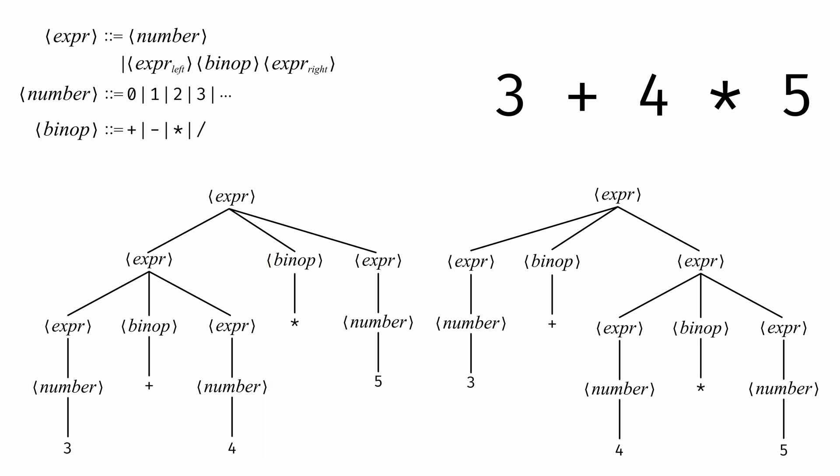The syntax we've defined is ambiguous. It allows for multiple different trees for the same expression. And these two syntax trees have different meanings, so it's important that we have a defined way to resolve the ambiguity.